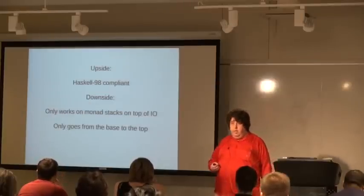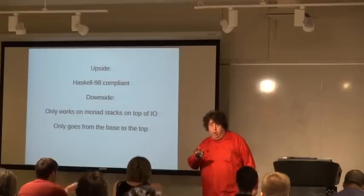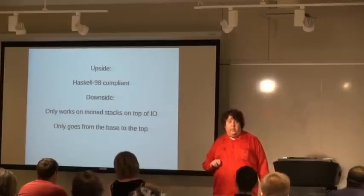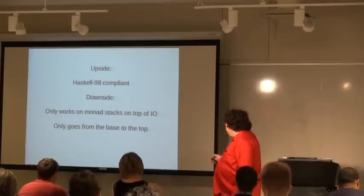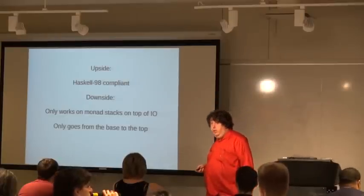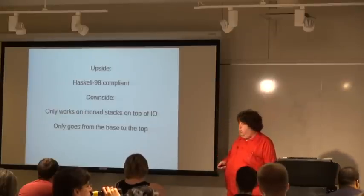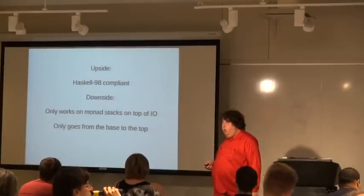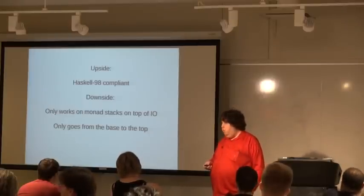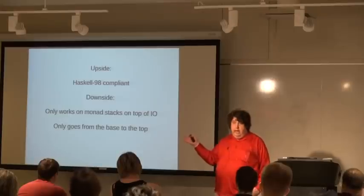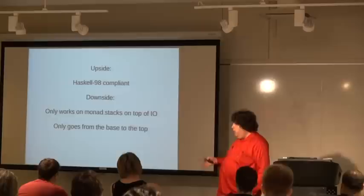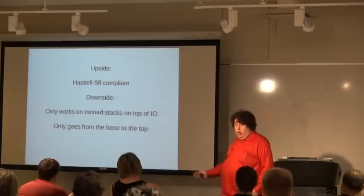The reason I'm giving you four different solutions is they all have different upsides and downsides, and which you want depends on where you draw the line. The advantage of MonadIO is it's Haskell 98 compliant, which means it works everywhere in Haskell land. The downside is it only works on Monad transformer stacks on top of IO. If you want to sit on top of STM, the ST Monad, or anything else where your base is something other than IO, it doesn't work.